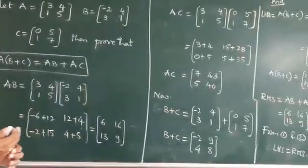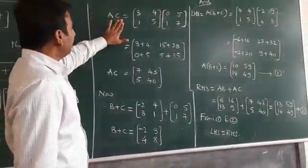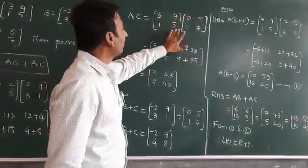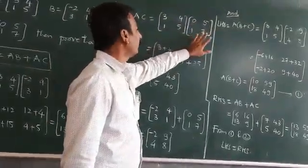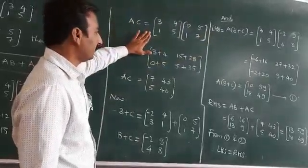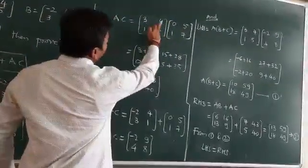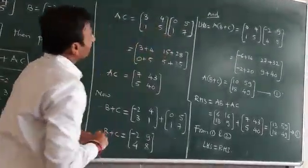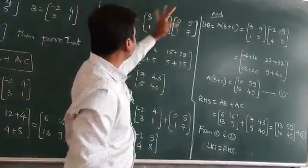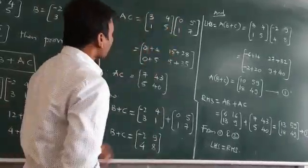Then we come to AC. AC is [3, 4; 1, 5] and [0, 5; 1, 7]. After taking this, go on multiplication. Then, now what I do, 3 into 0 plus 4 into 1. See, 3 into 0 is 0, 4 into 1 is 4. And the next, 3 into 5 is 15, 4 into 7 is 28.